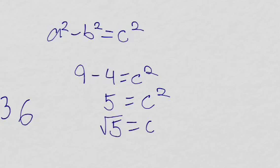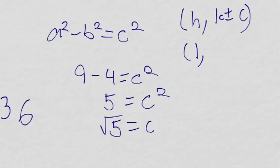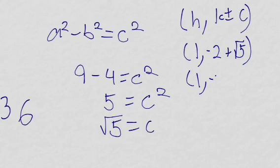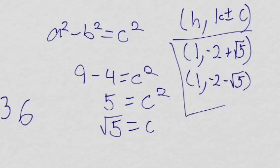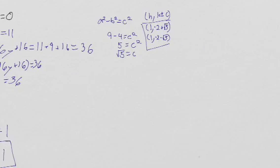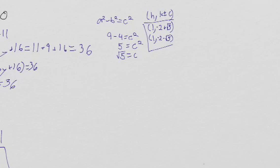Now that we have that, we can use our formula for our foci, which is h, comma k plus or minus c. That gives us (1, negative 2 plus root 5) and (1, negative 2 minus the square root of 5). That will be our answer for the foci, and I'll go ahead and paste in a graph.